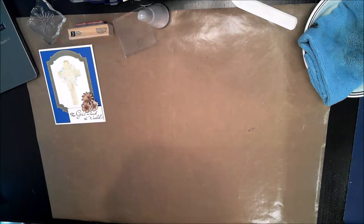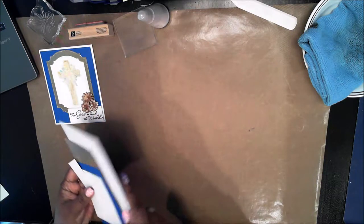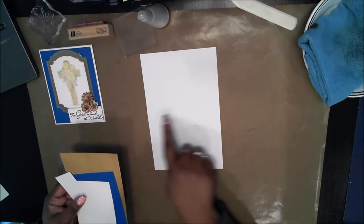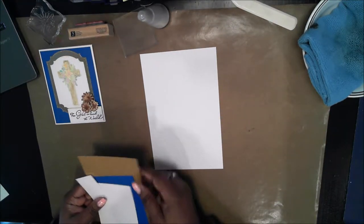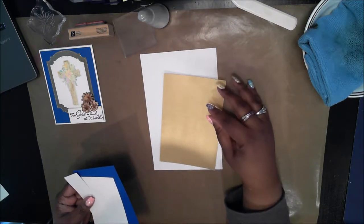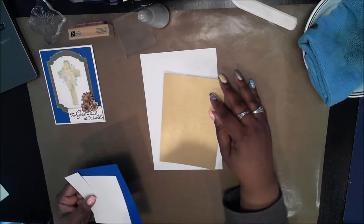Let me go over the materials that this card uses today. I have a card base cut eight and a half by five and a half, scored at four and a quarter. I have gold shimmer paper. This is more than I needed for this card but you need at least three and a half by five inches.